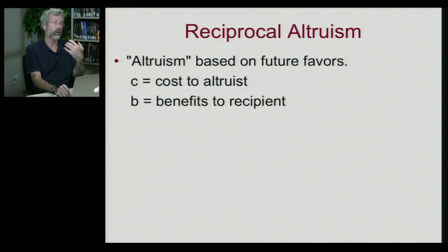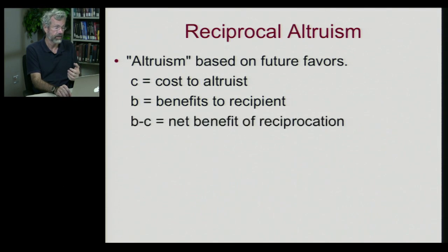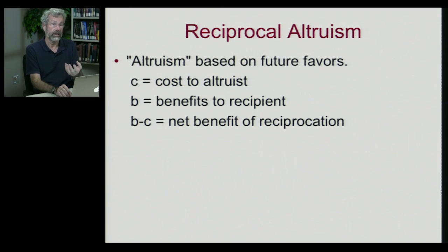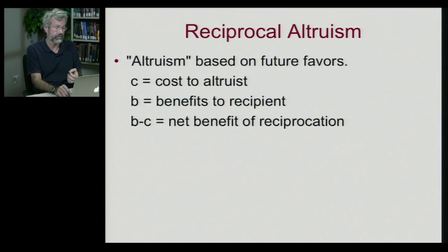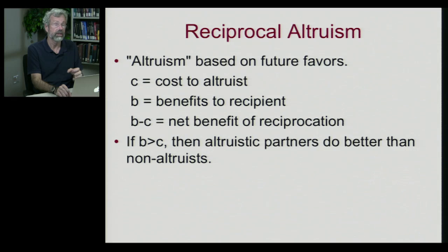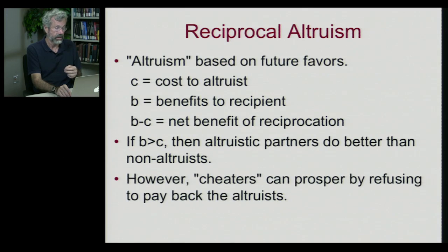This might allow for cooperation between unrelated individuals. If I help you today and you help me tomorrow, we'll each have received a benefit at some cost to ourselves. B minus C would describe the net benefits of reciprocation, and as long as B is greater than C, altruistic partners would do better than non-altruists. You want to form cooperative relationships if there's a net benefit from these kinds of exchanges.